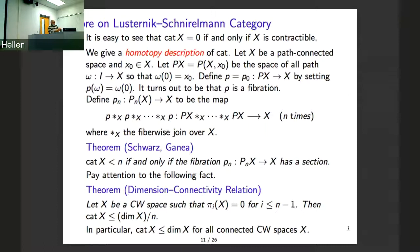Also, you have information about category: if a space X is highly connected — trivial homotopy groups up to dimension less than n — then you have this bound. In particular, the Lusternik-Schnirelmann category is less than or equal to the dimension divided by connectivity.